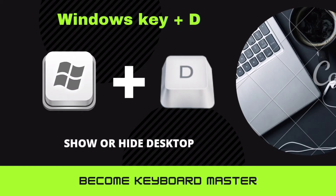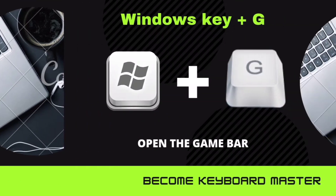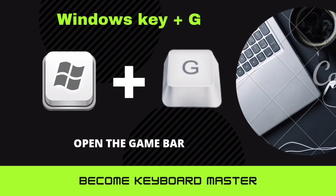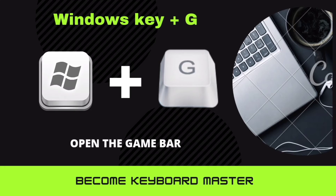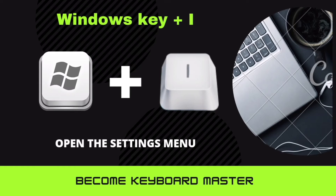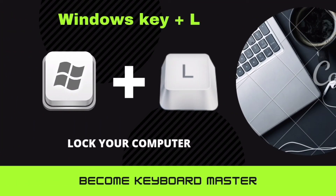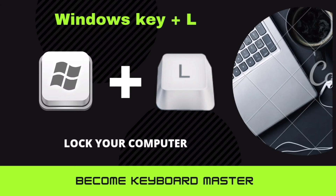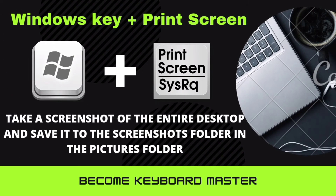Windows key plus D is used to show or hide the desktop. Windows key plus G is used to open the Game Bar. Windows key plus I is used to open the Settings menu. Windows key plus L is used to lock your computer. Windows key plus Print Screen is used to take a screenshot of the entire desktop and save it to the Screenshots folder in the Pictures folder.